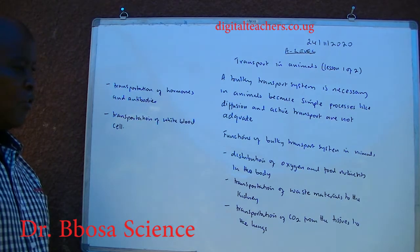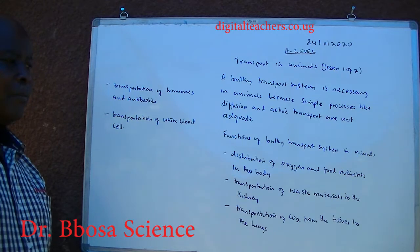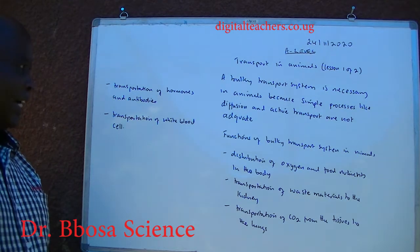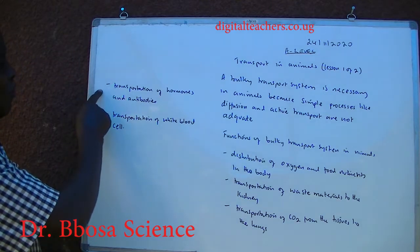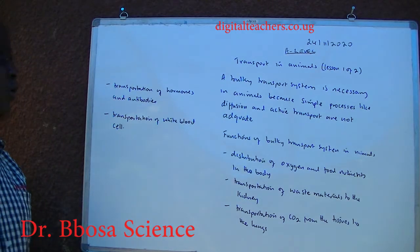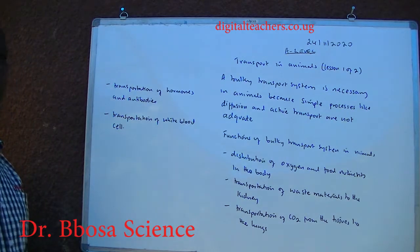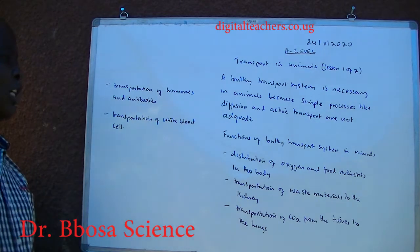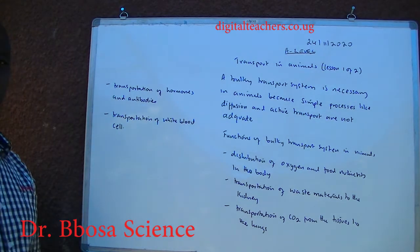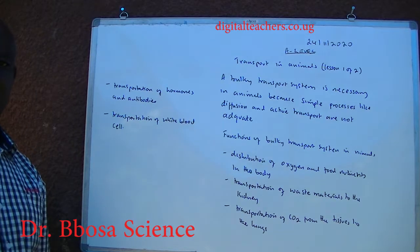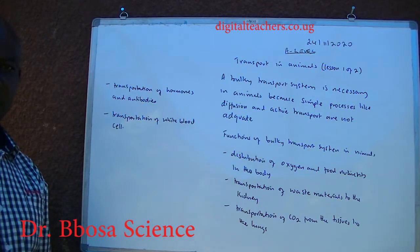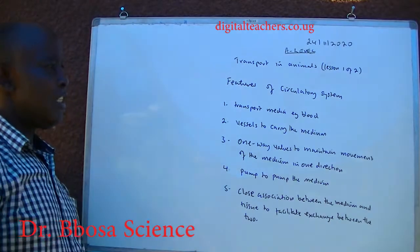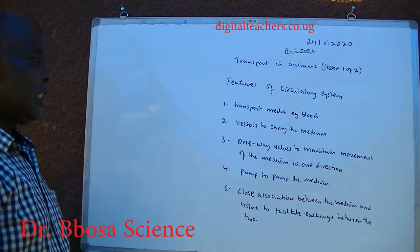4. Transportation of hormones and antibodies. 5. Transportation of white blood cells to defend the body. Features of the transport system: it requires a transport media, for example blood, and vessels to carry the media.